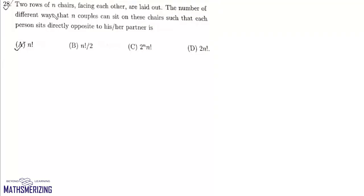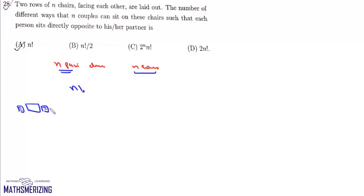Question 28: two rows of N chairs facing each other, N couples must sit such that each person sits directly opposite their partner. There are N pairs of facing chairs; the N couples can be assigned to these N pairs in factorial N ways. In each pair, the couple can sit in 2 ways (person 1 on left or right). So for N pairs there are 2 to the power N arrangements within pairs. Total number of ways is factorial N times 2 to the power N, and that's option C.